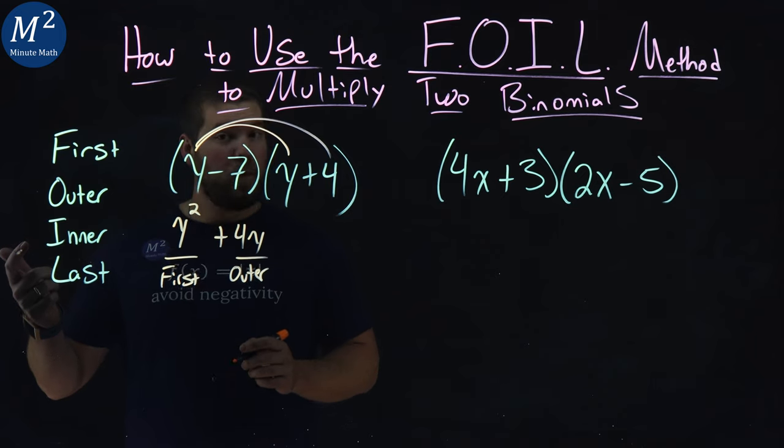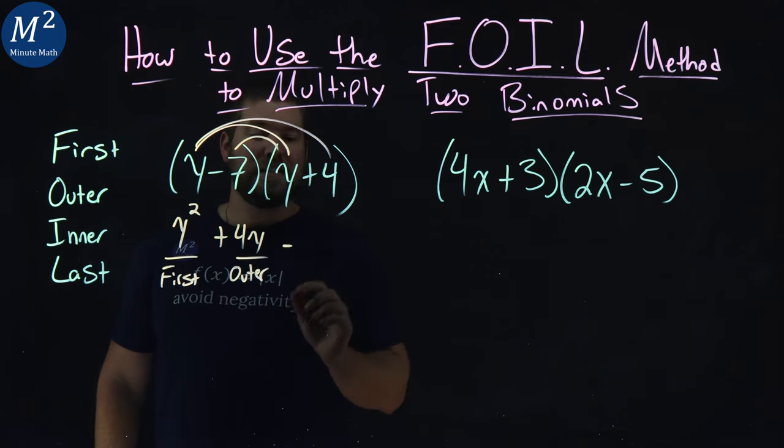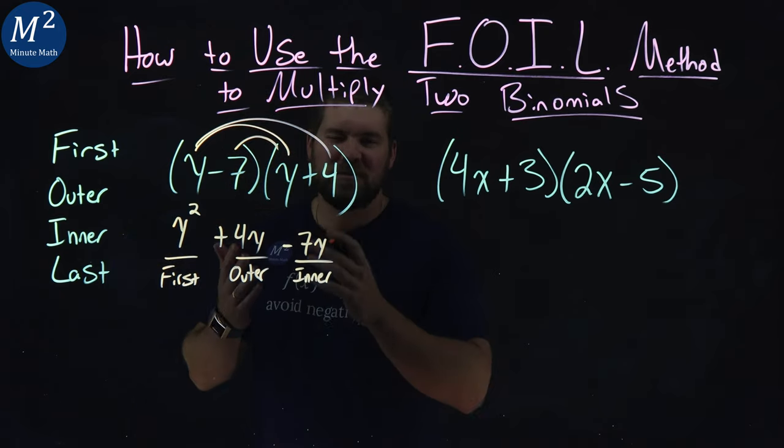What's next is the inner ones. That's going to be negative seven times y, which is negative seven y. Again, that's the inner. Now, you won't write this every single time, but I'm just trying to show it to you.